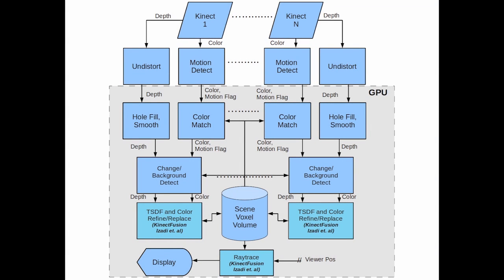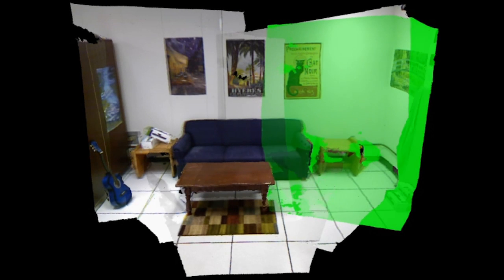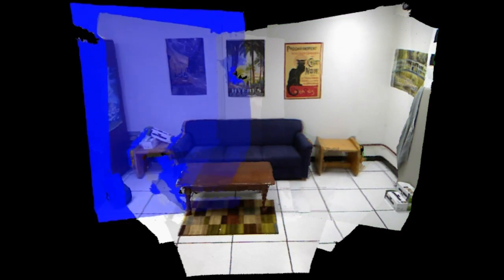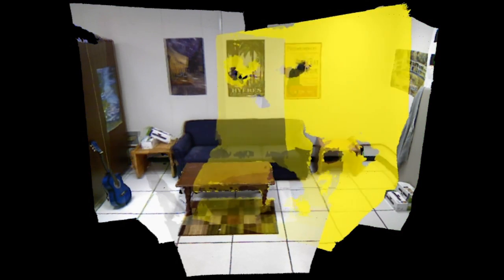Our implementation, illustrated here, adapts existing volumetric data fusion techniques designed for a single moving depth camera to an array of fixed cameras, allowing all objects in a room-sized scene to be updated simultaneously and dynamically. We start with the color and depth images from an array of five Kinect depth cameras. The contribution of each camera in the scene is shown here.